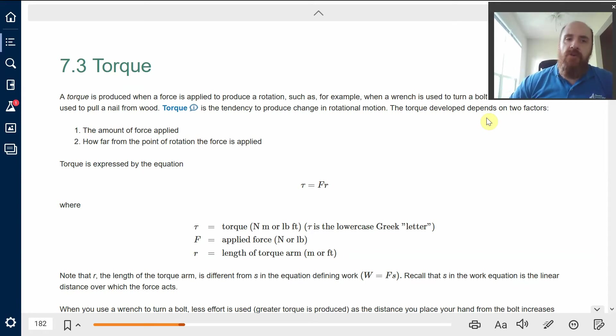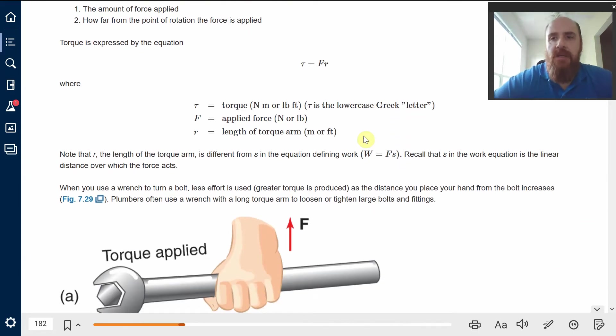The formula for torque - again, torque is what happens when you apply a force to change an object's rotational state of motion. That would apply to turning a bolt with a wrench. You're changing the bolt's rotational state of motion by applying a force. The formula for torque is this lowercase Greek letter tau, equals force times R, which is the torque arm.